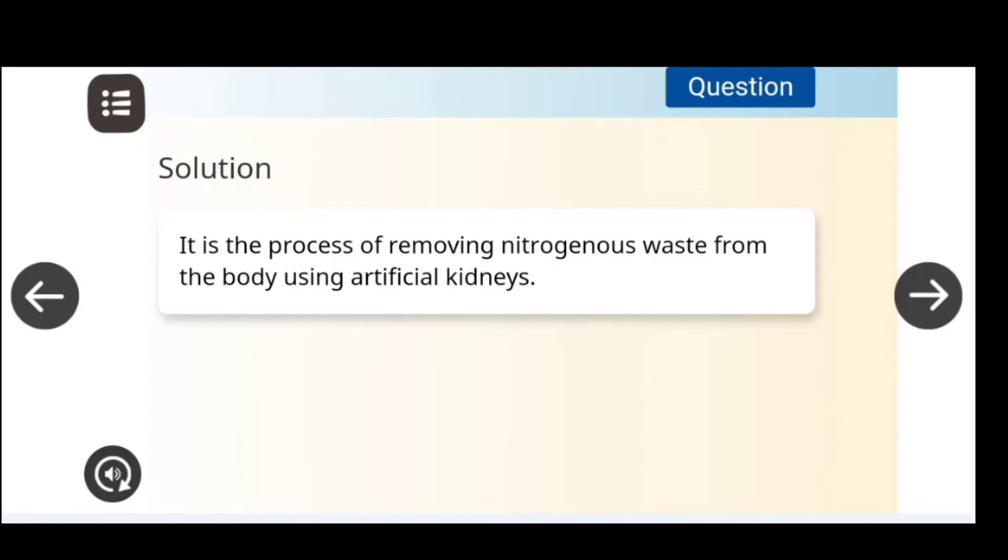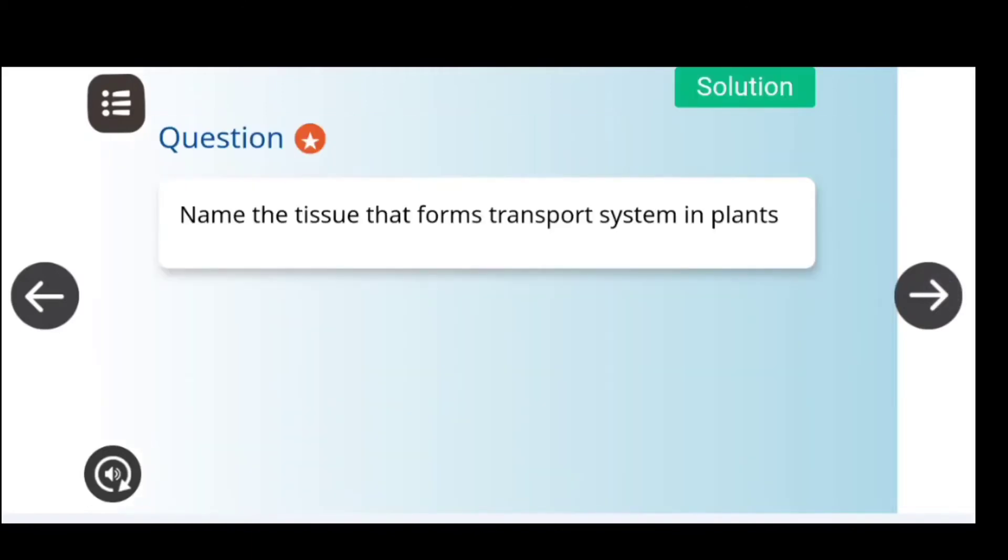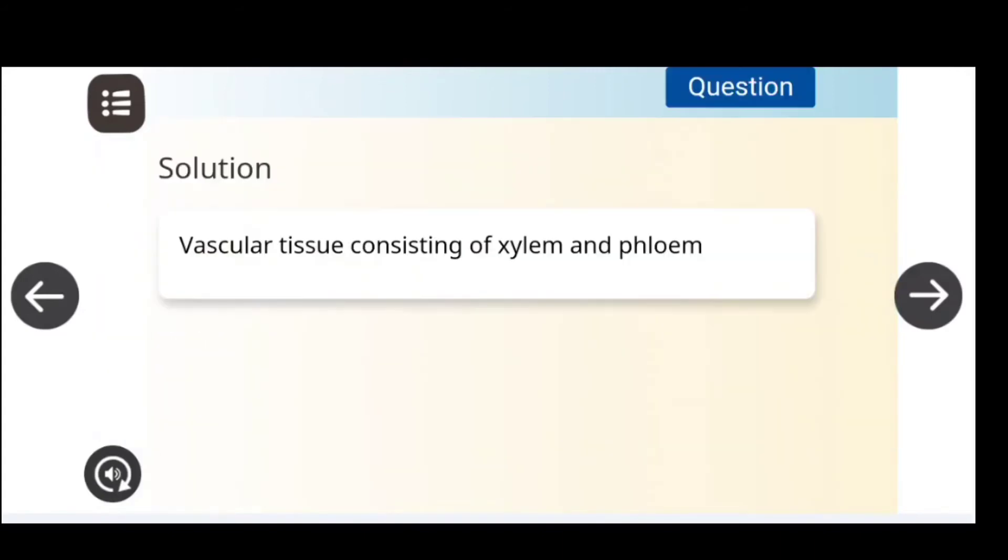Which tissues form the transport system in plants? Vascular tissues are considered: the xylem and the phloem.